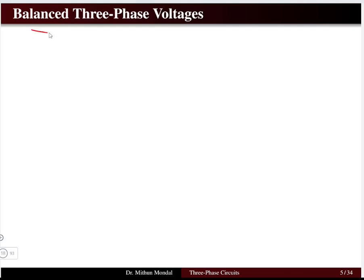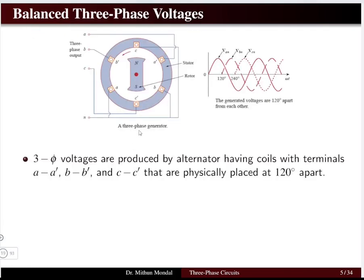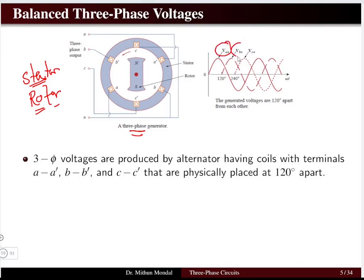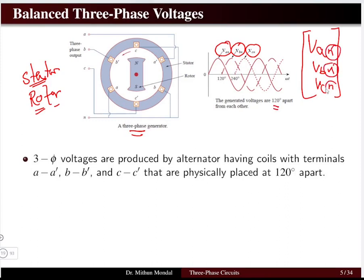Now let us look at balanced three-phase voltages. In a three-phase generator or alternator, power is generated at the generating station. It has two major components: the stator, which carries the magnetic field wires, and the rotor, which rotates to produce AC power. The three phase voltages van, vbn, and vcn are produced by three wires separated 120 degrees from each other. The 'n' denotes the neutral wire.